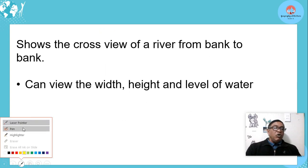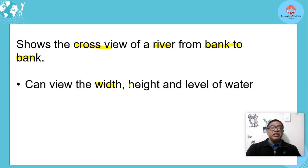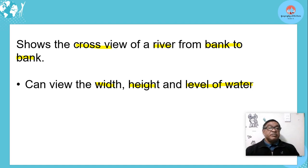To summarize, the cross profile shows us the cross view of a river from bank to bank. We can also view the width, the height, and the level of the water if there's water in the area.